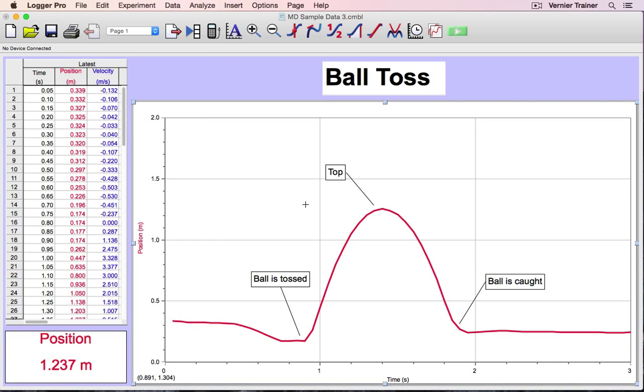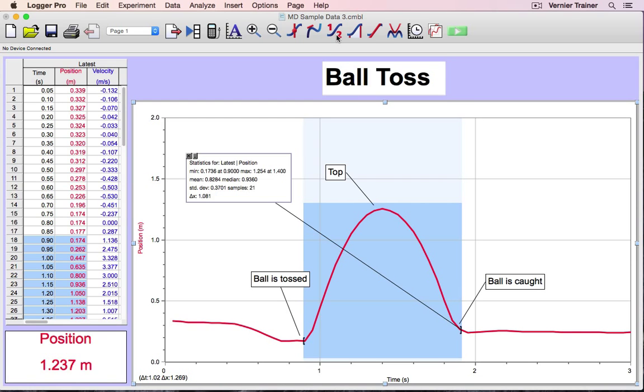Alternately, I can click and drag on the graph first to highlight a region, and then apply statistics.